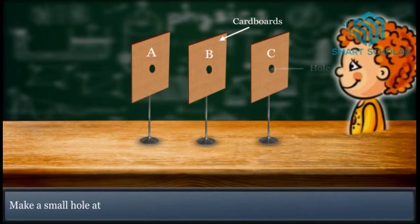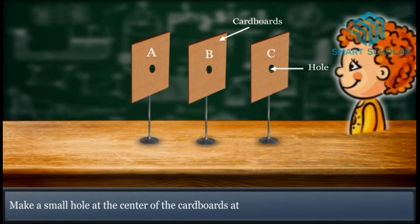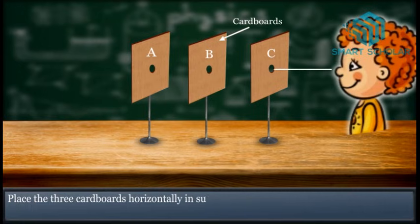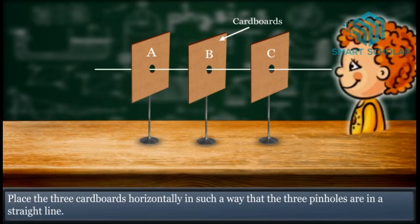Make a small hole in the center of the cardboard at the same horizontal level. Place the three cardboards horizontally in such a way that the three pin holes are in a straight line.